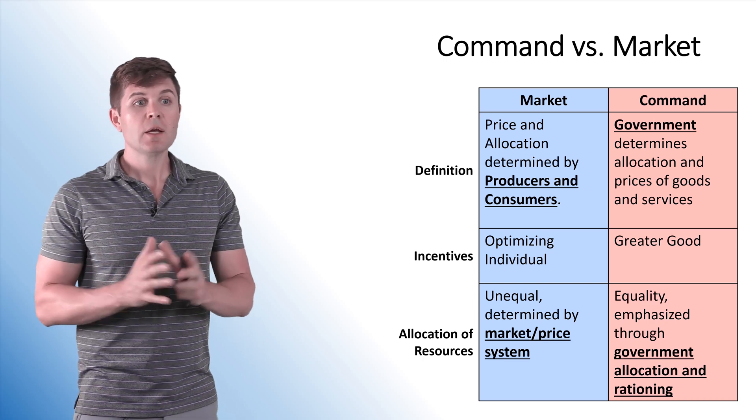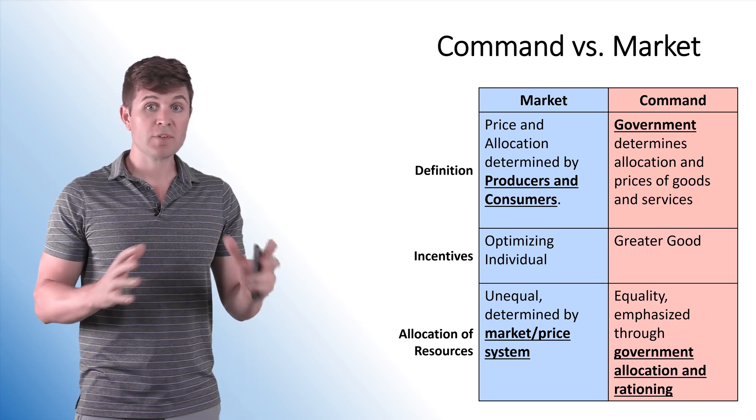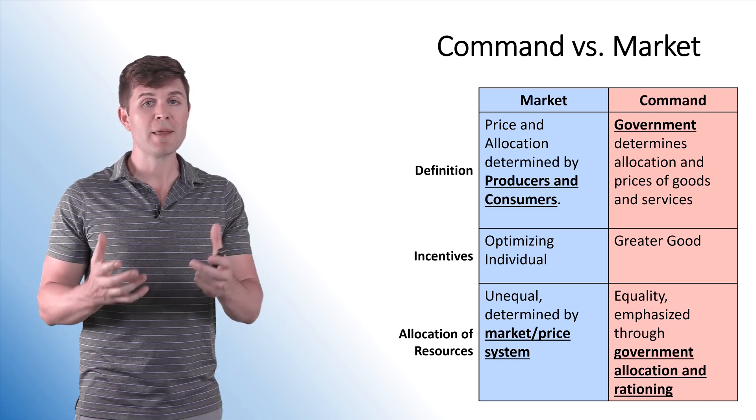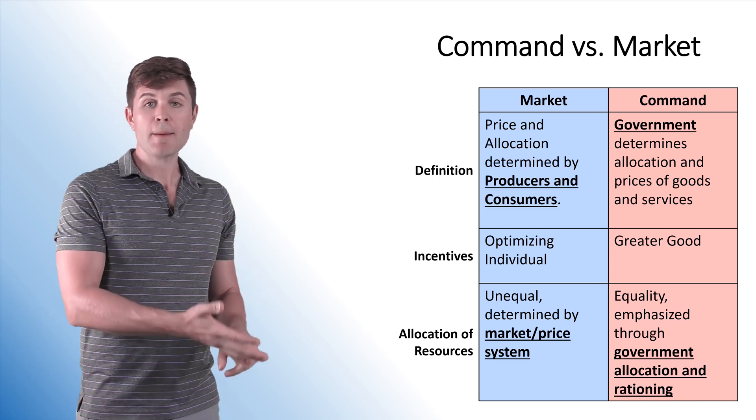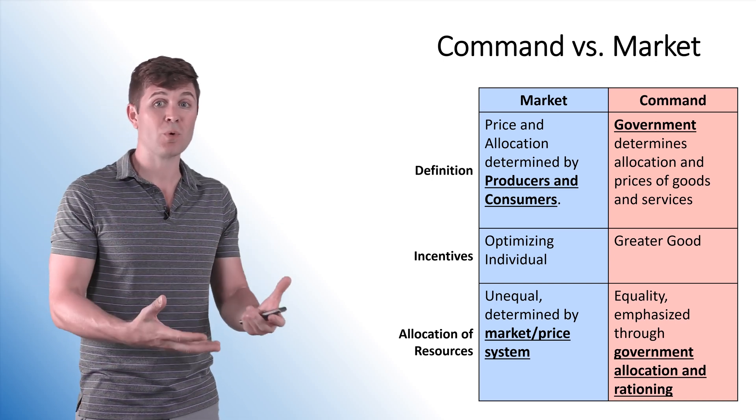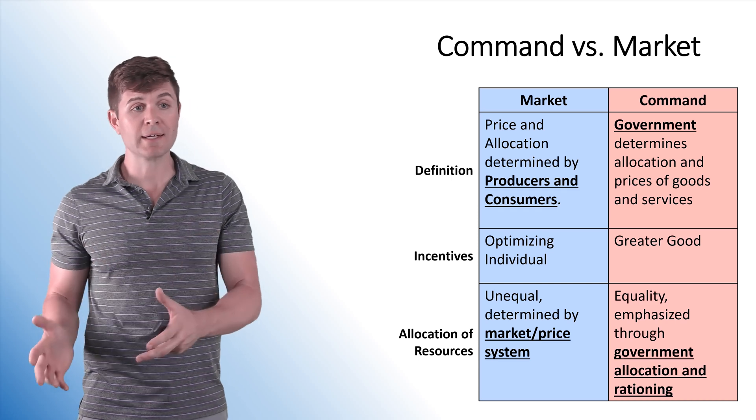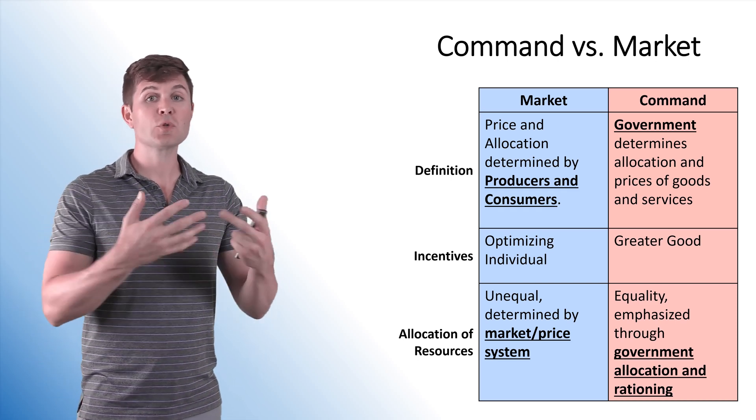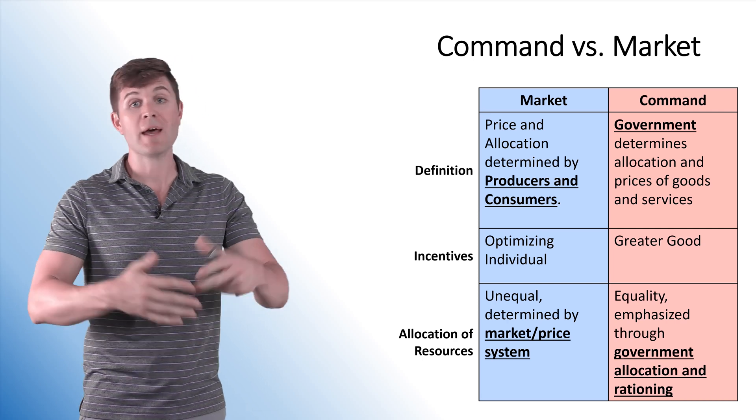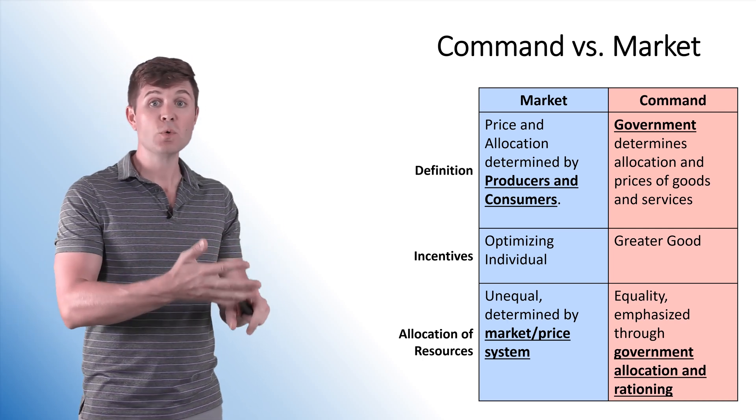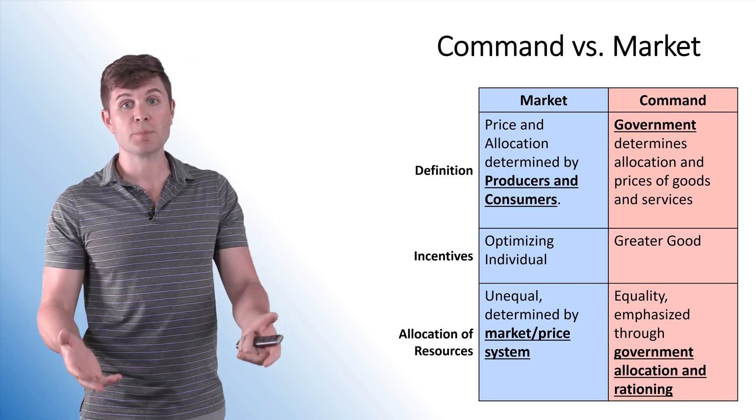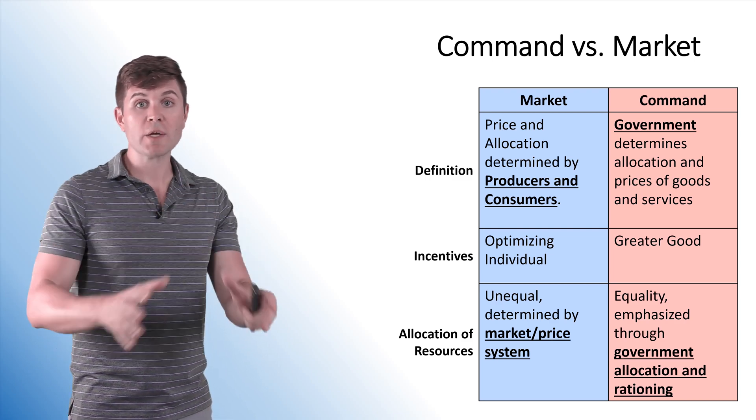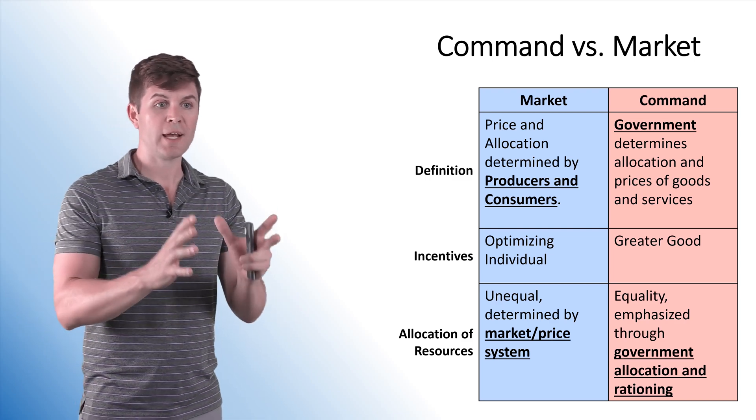In a market economy, price and the allocation of scarce resources is determined by the market itself. It's determined by producers and consumers acting in their own best interest. In a command economy, we've got government that makes all these calls. Some central planning agency or benevolent social planner deciding who's going to get what, how much is going to be produced, how they're going to produce it. All these different questions are answered by the government.